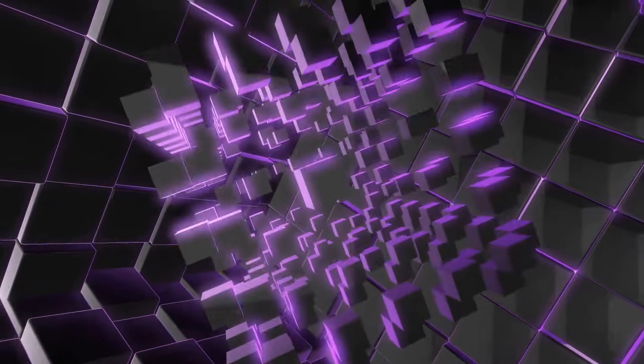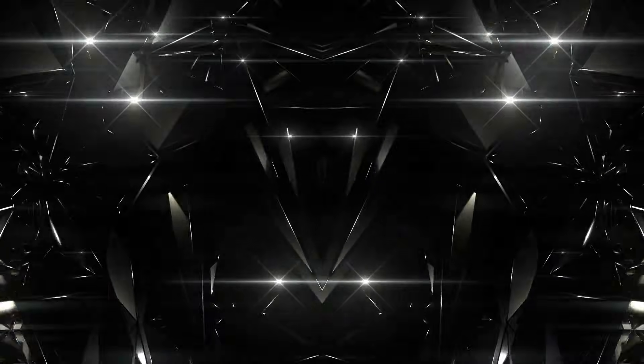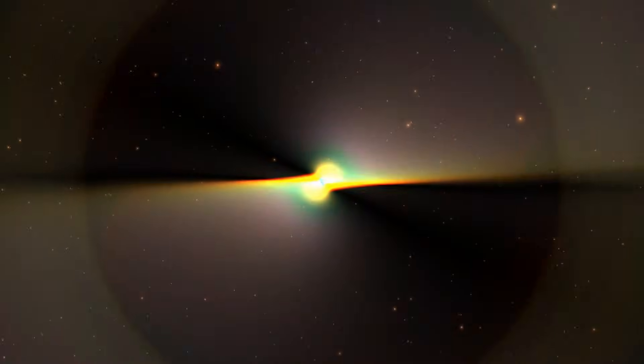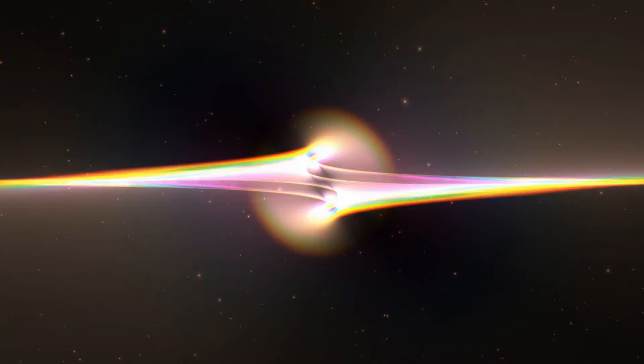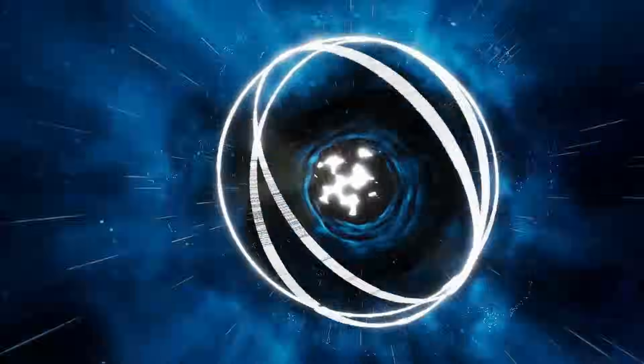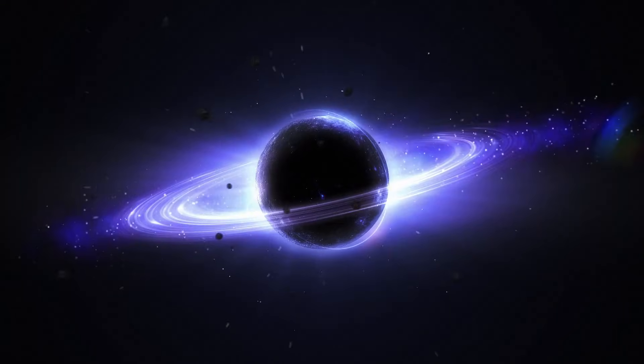In this view, dark matter could have its own interactions. Its own version of electromagnetism. Its own dark photons. Even its own kind of chemistry. A universe within a universe. Not mystical. Not magical. Just hidden by the architecture of physics itself. And if that is true, then dark matter might not be dark at all, not to the beings who live inside it.